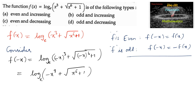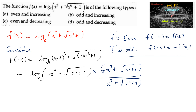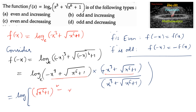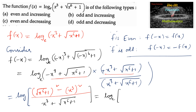Let's rationalize — multiply and divide by (x³ + √(x⁶ + 1)). Applying the identity (a - b)(a + b) = a² - b², we get (√(x⁶ + 1))² - (x³)² in the numerator, all divided by (x³ + √(x⁶ + 1)). Simplifying, the numerator becomes x⁶ + 1 - x⁶ = 1, so we can cancel and write log of 1/(x³ + √(x⁶ + 1)).